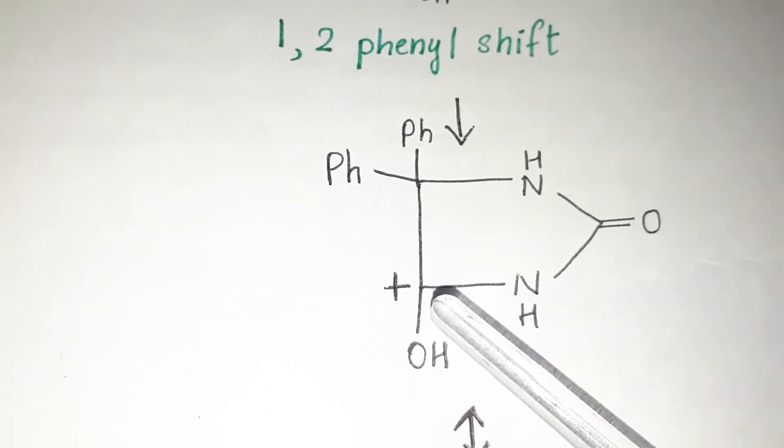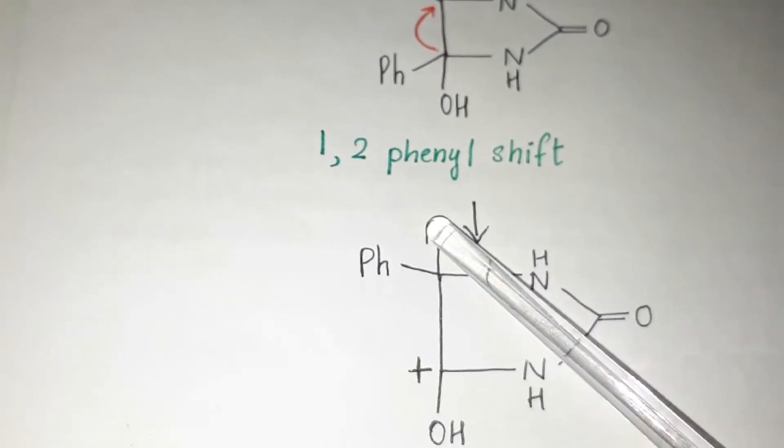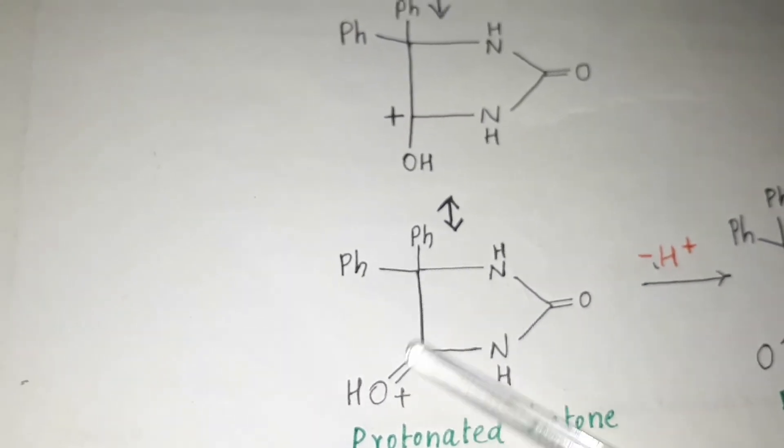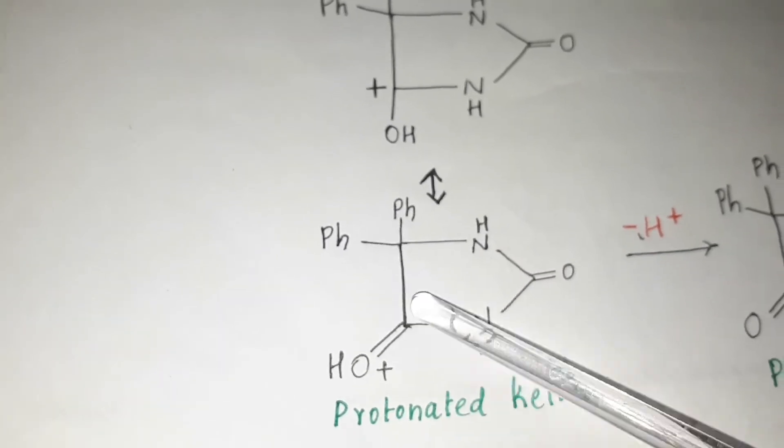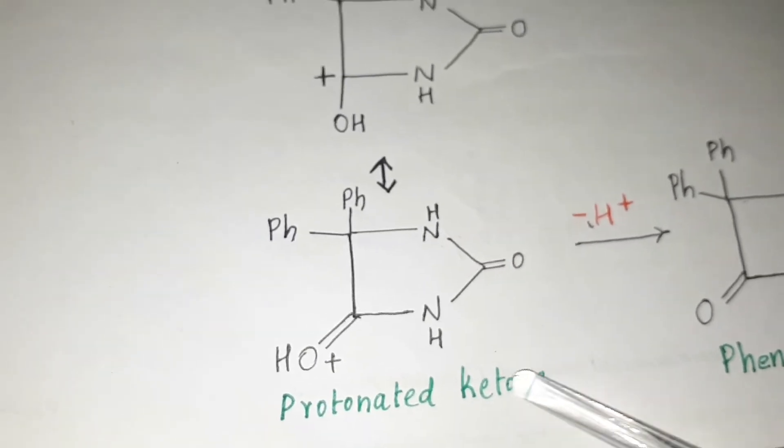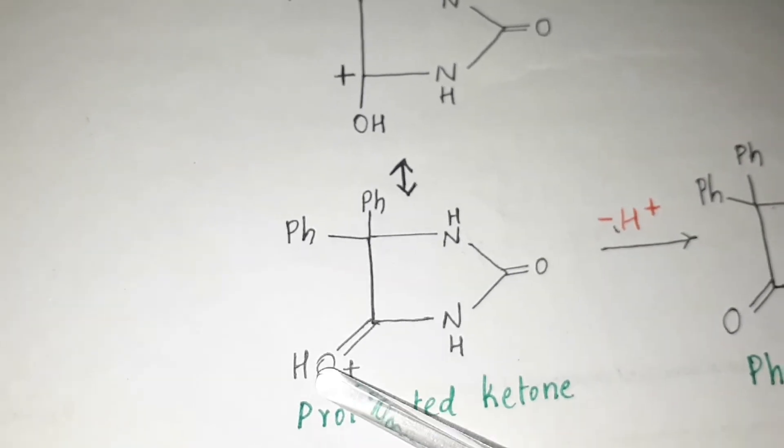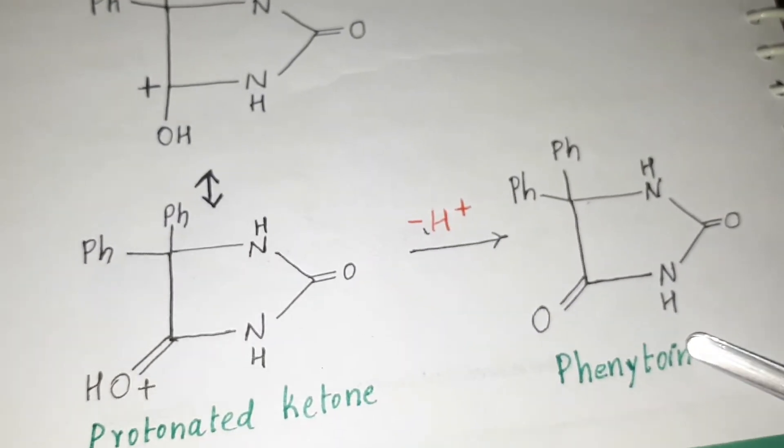And this compound is formed. Instead of the phenyl group, a positive charge is there, and then we have the protonated ketone (C=O-H+, that is protonated ketone). Here, a loss of H+ occurs again, and it leads to the formation of phenytoin.